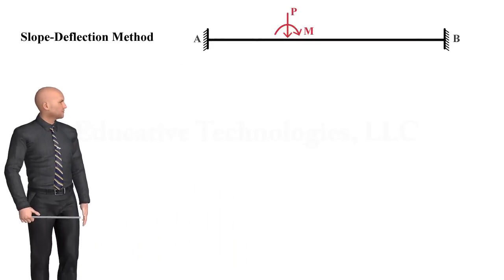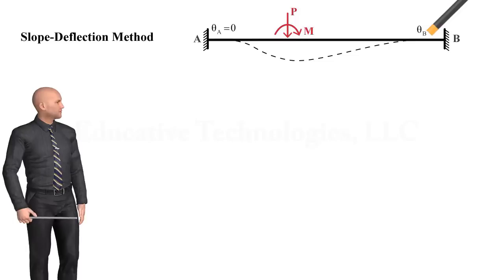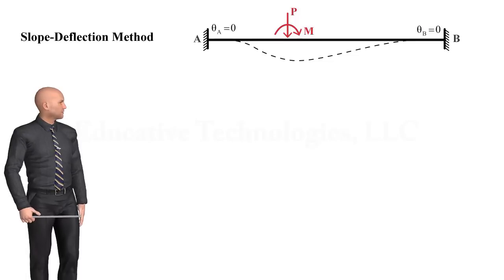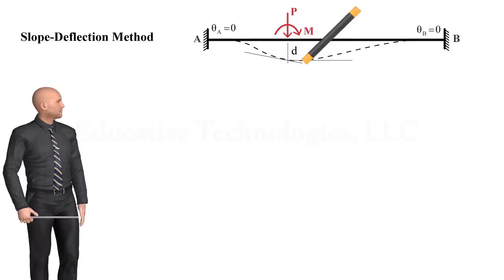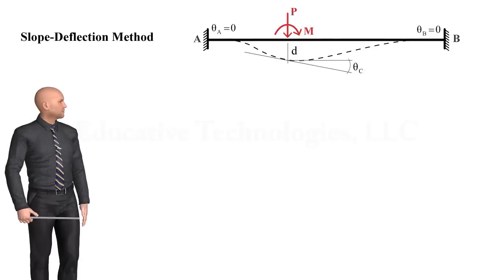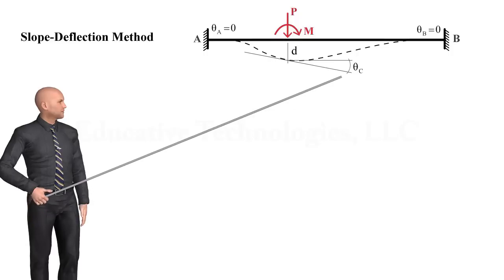The beam is fixed at both ends. Therefore, its elastic curve has a zero slope at points A and B. Let's assume that the beam is going to have a downward displacement at joint C. We label the amount of displacement as D, and we denote the slope of the elastic curve at C as theta C.